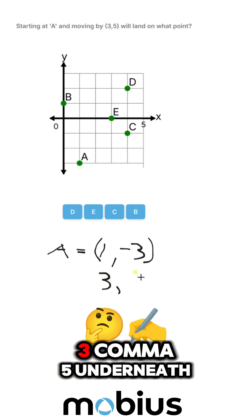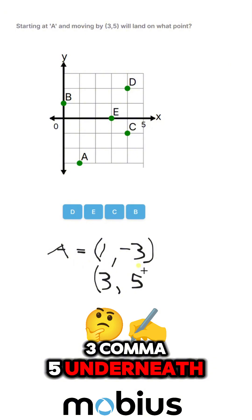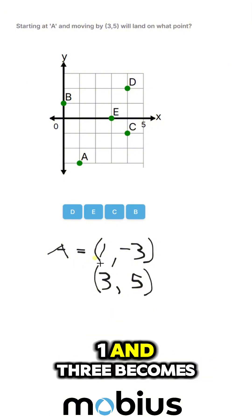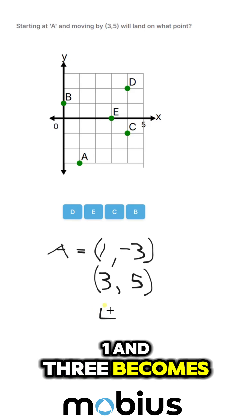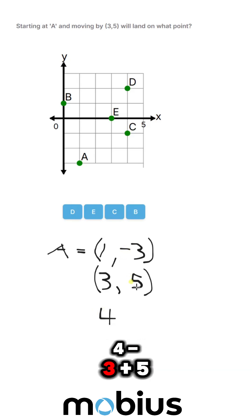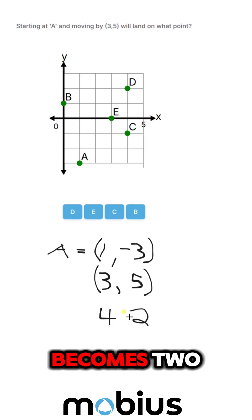So if I write 3, 5 underneath, and we add those, 1 and 3 becomes 4. Negative 3 plus 5 becomes 2.